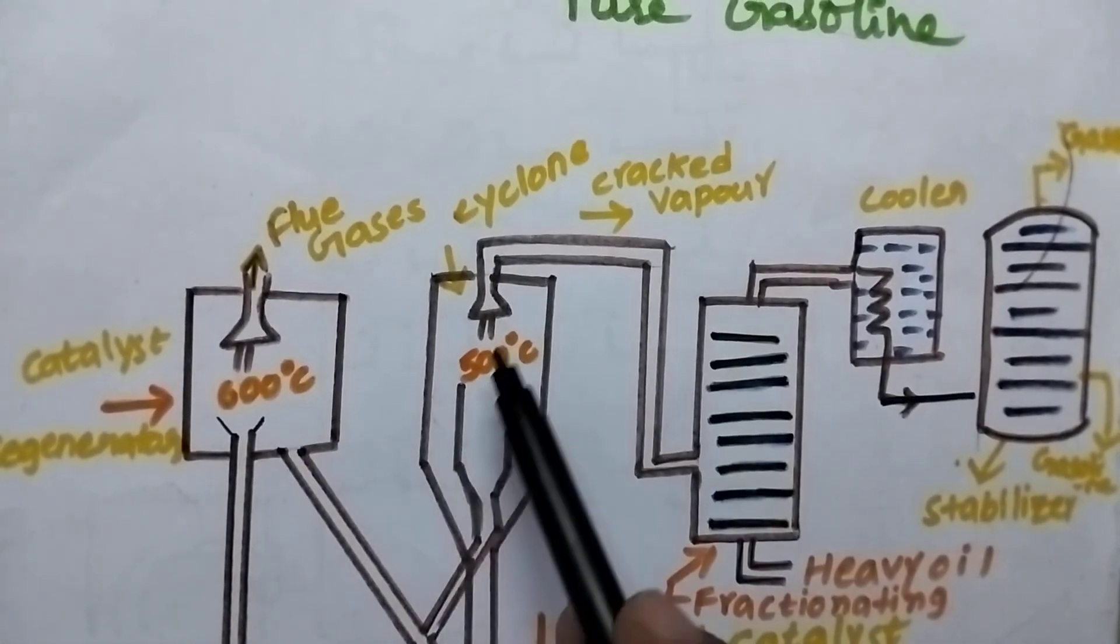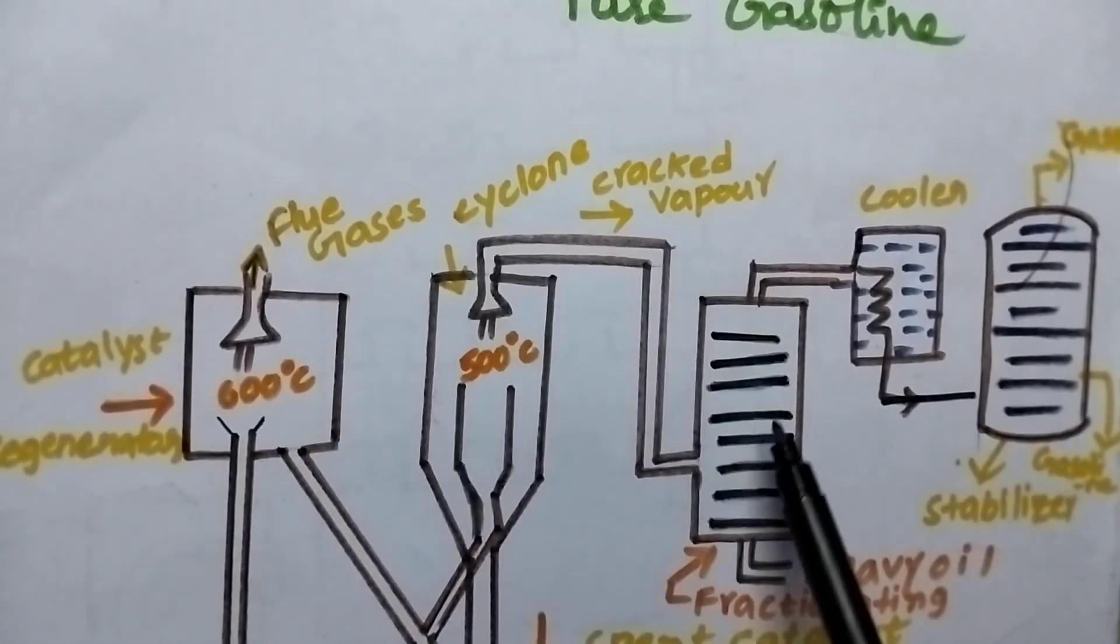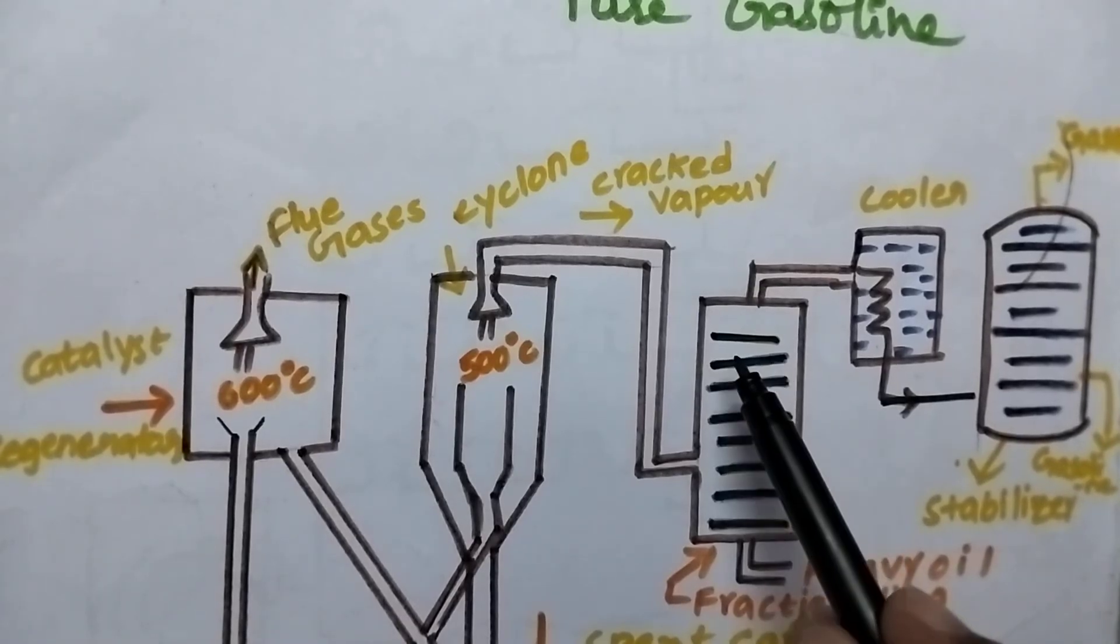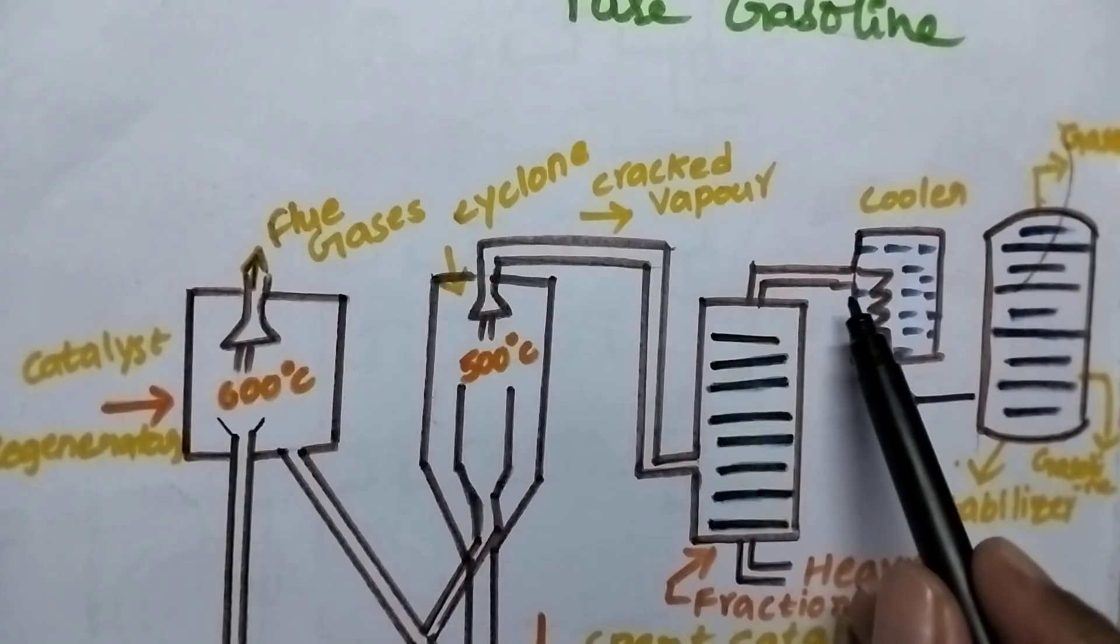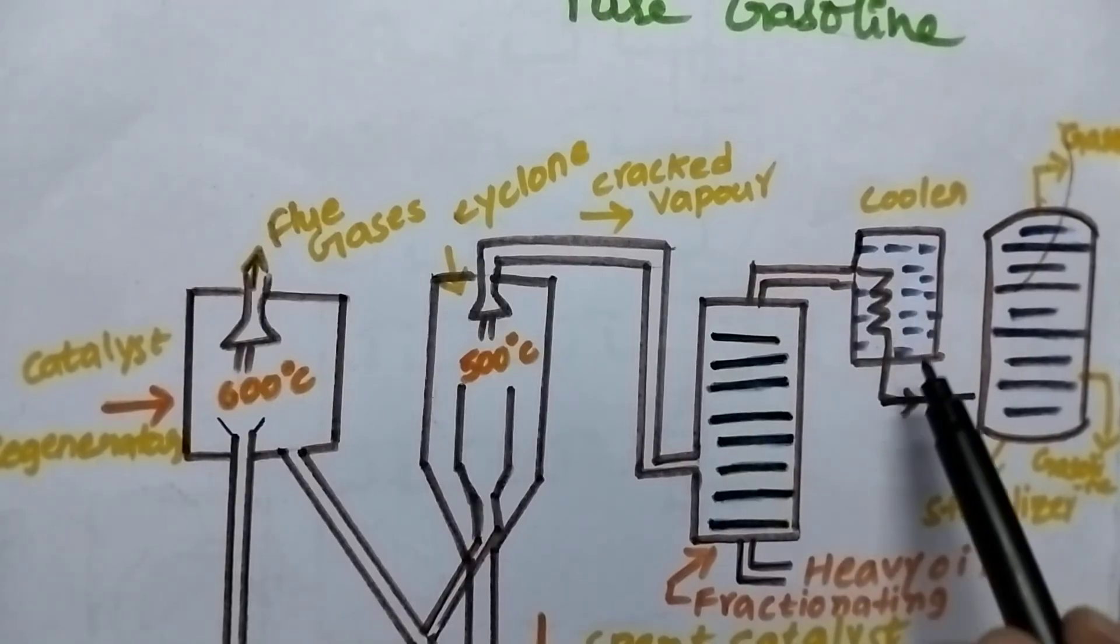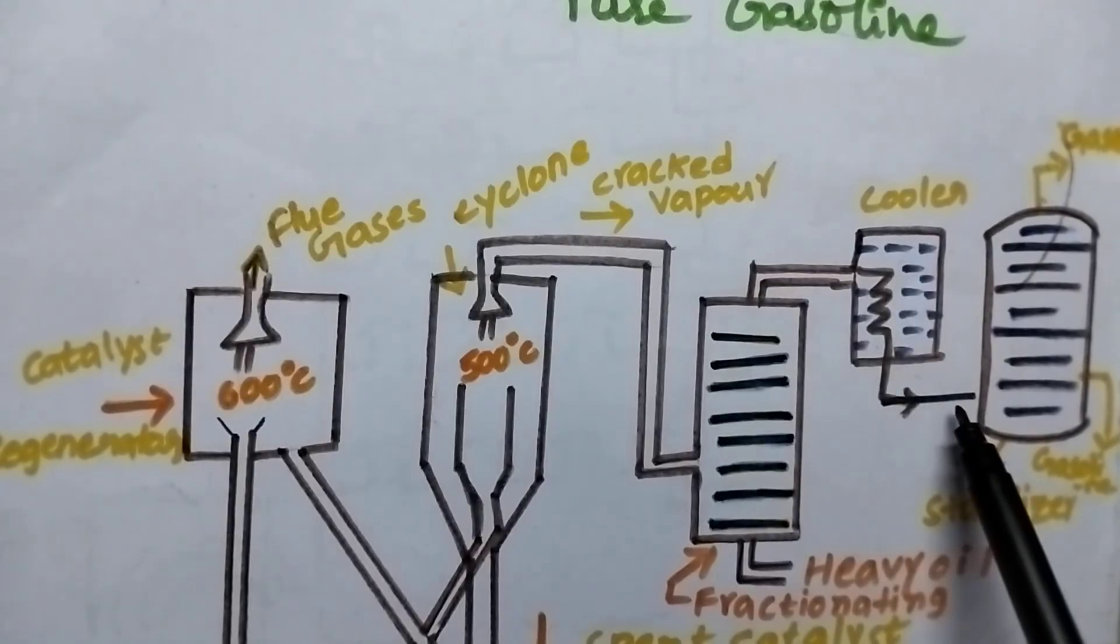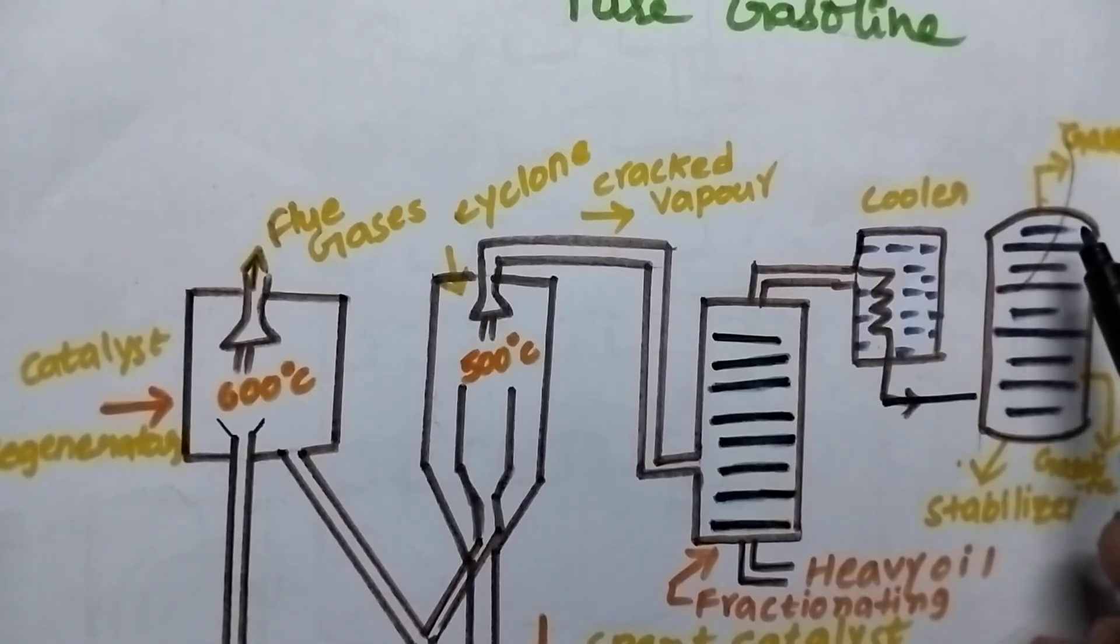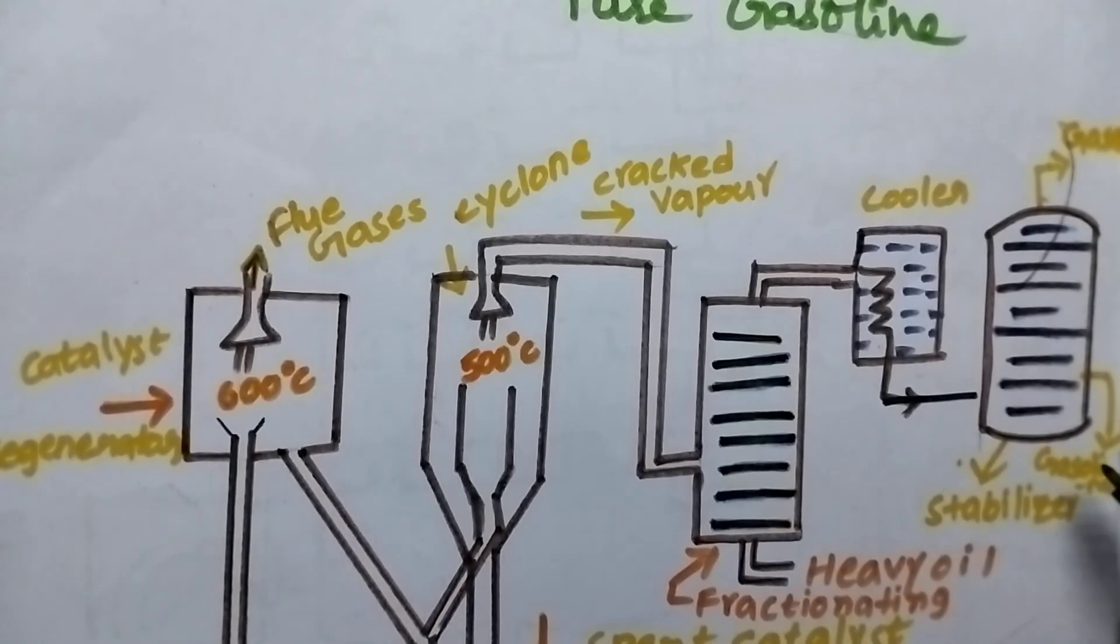The cracked vapors are passed through the fractionating column where the heavy oil vapors are separated from the gasoline vapors. The gasoline vapors are then passed through the cooler and from the cooler to the stabilizer, where the lightweight gases are completely separated from the pure gasoline.